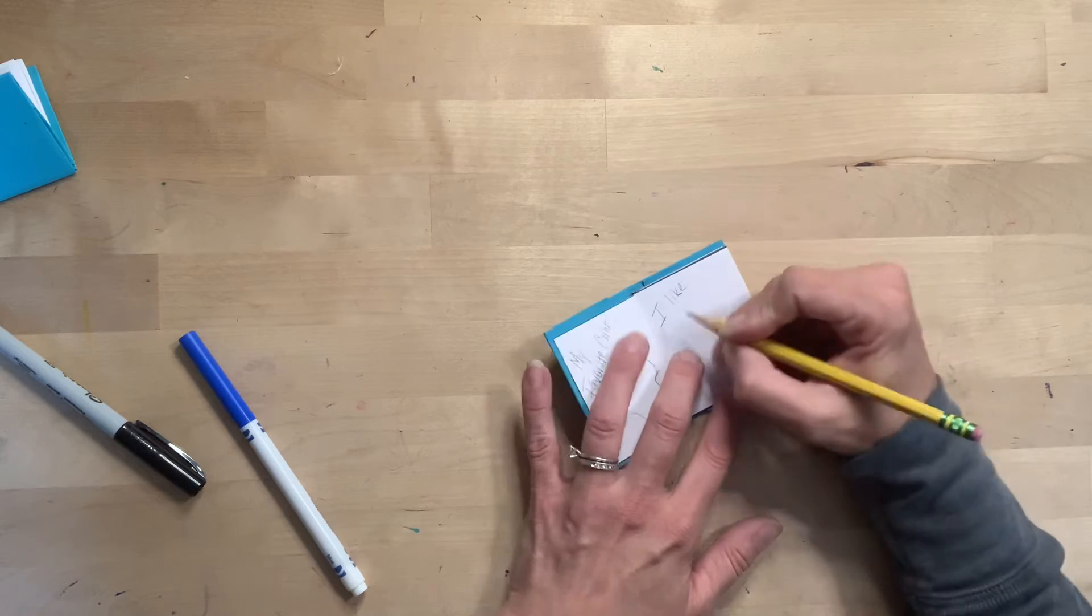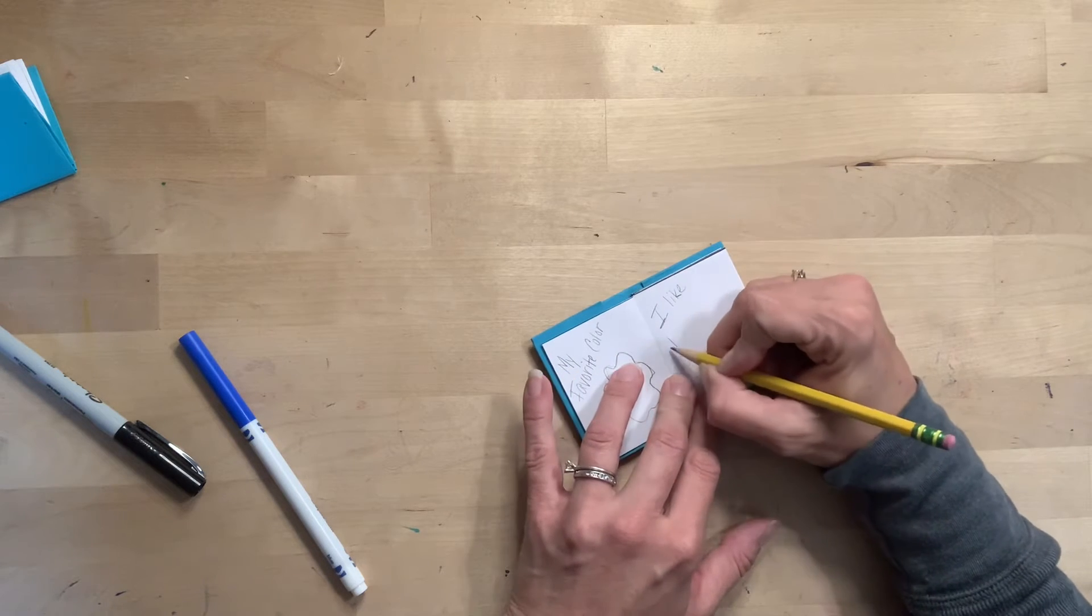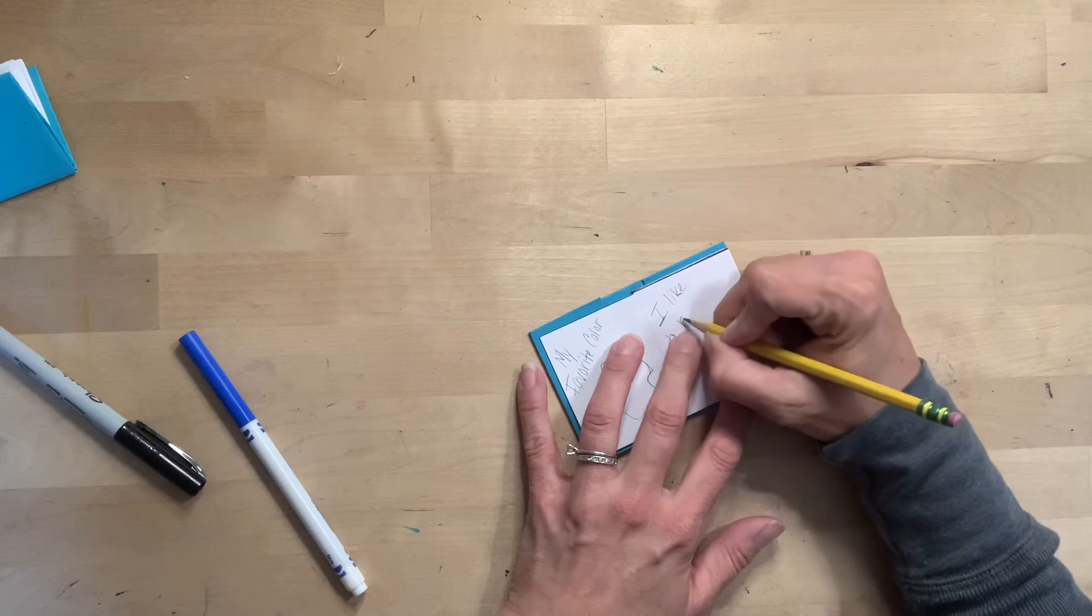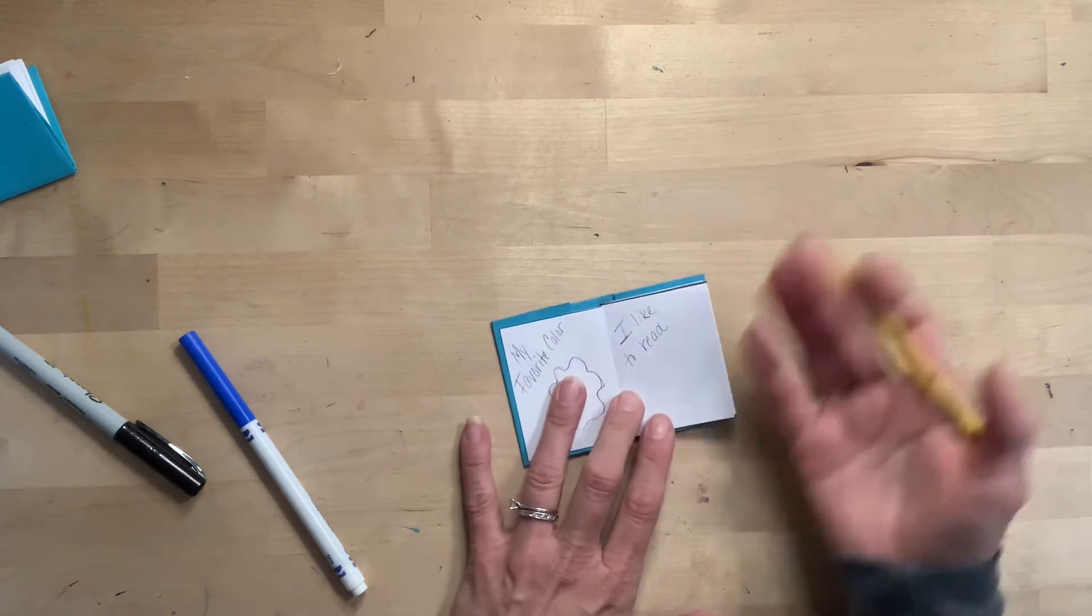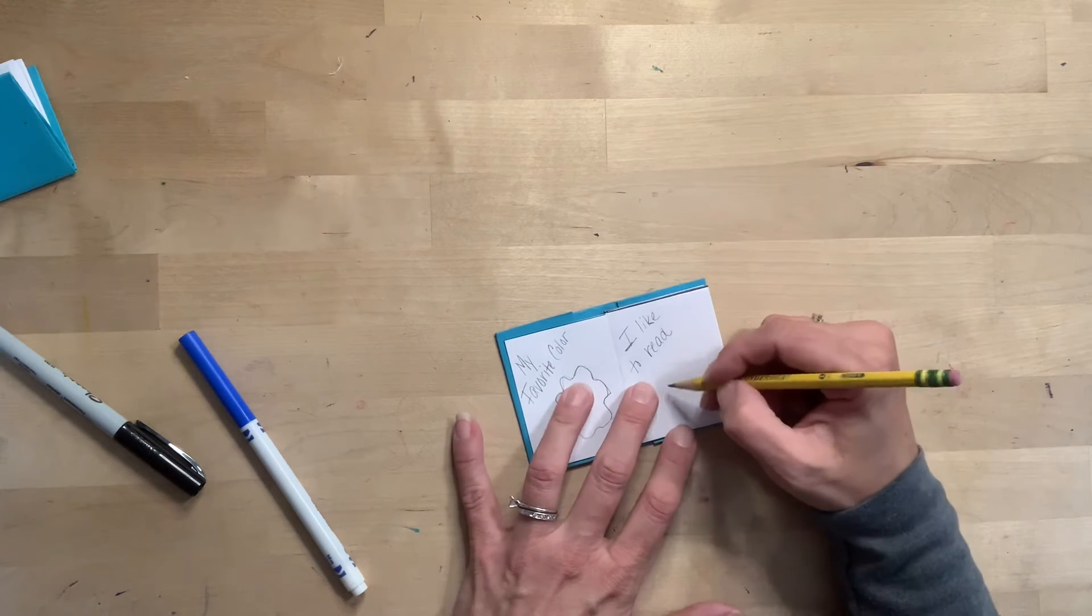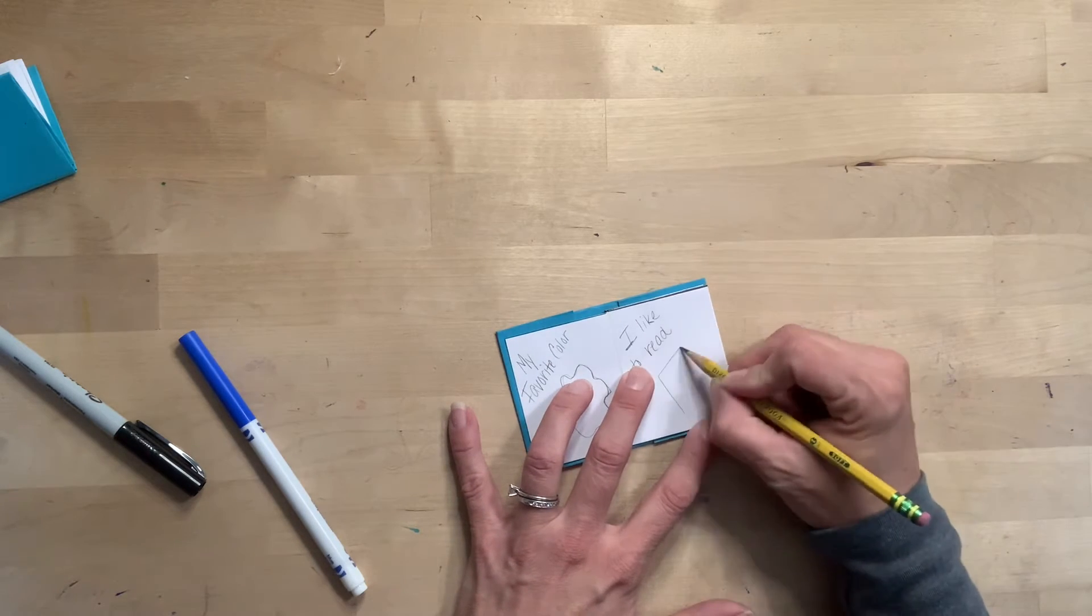I skipped a page. Things you like to do. So even if you write things, also try to draw a little picture that goes with it. So I like to read, so I'm going to draw a book.